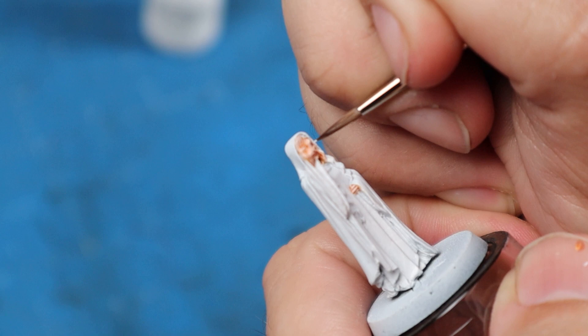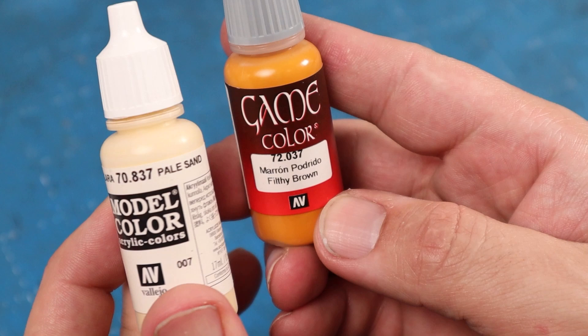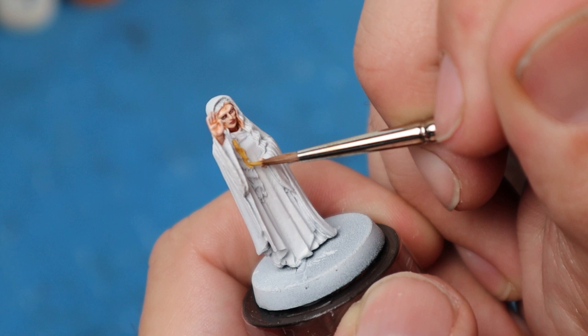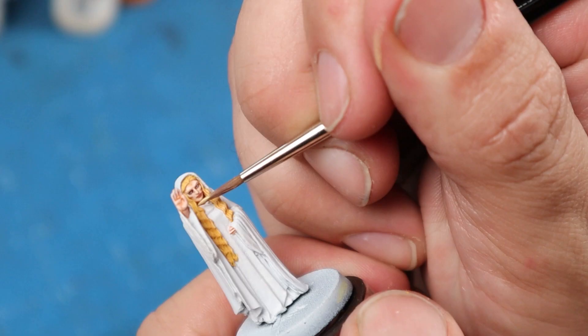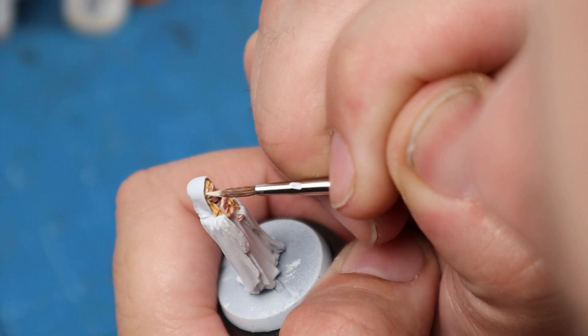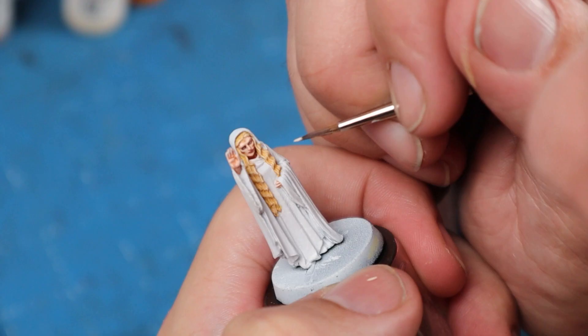I mixed filthy brown and pale sand to get a nice golden blonde base tone and started applying it to the hair, doing my best to avoid any overspill onto the robe's white undercoat. I then mixed in some pale sand to the paint for the midtones, before a final highlight of pure pale sand, again just catching the most pronounced strands with my brush.